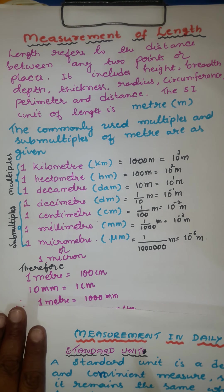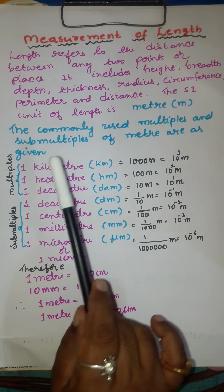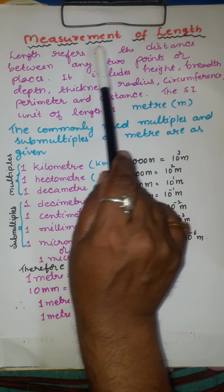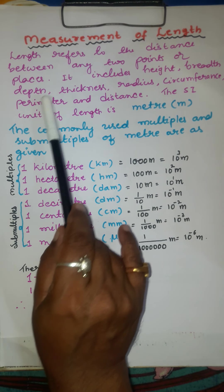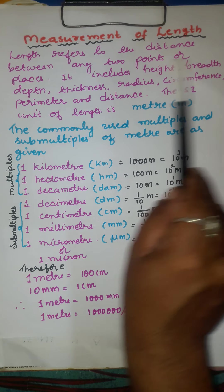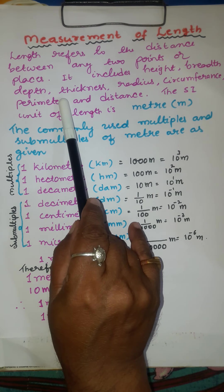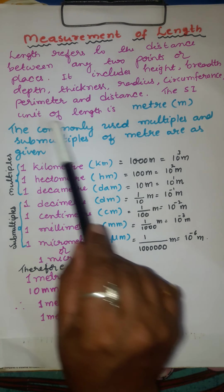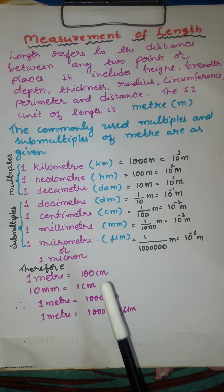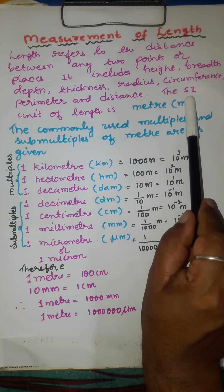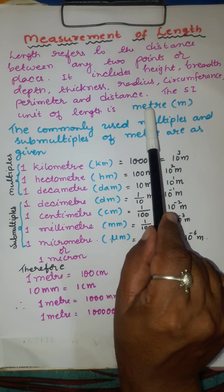Now let us focus on measurement of length. Length refers to the distance between any two points or places. It includes height, breadth, depth, thickness, radius, circumference, perimeter, and distance. The SI unit of length is meter, and small letter 'm' is the symbol.